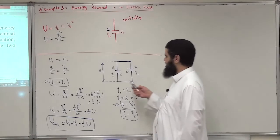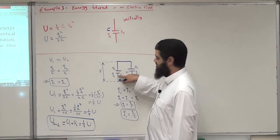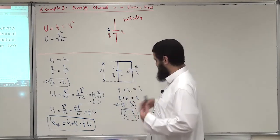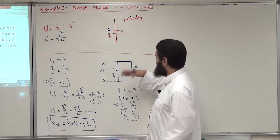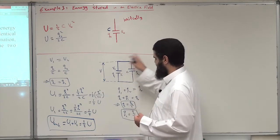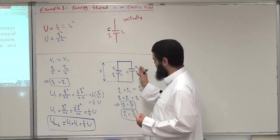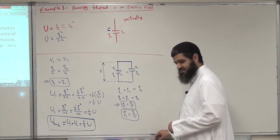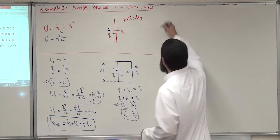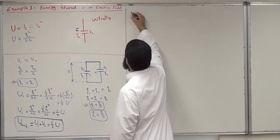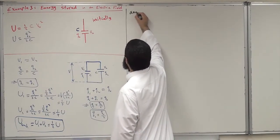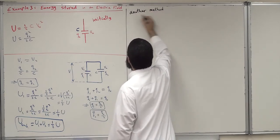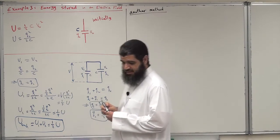Why is the energy reduced? Because there is work done by the electric field to charge the other capacitor. It loses some energy because it moves the charges, and that work is deducted from the initial stored energy. Let us now solve this problem using another method.